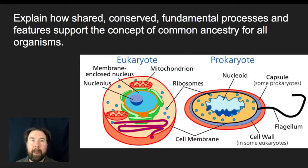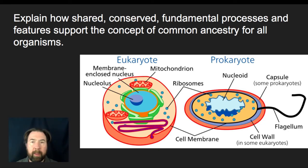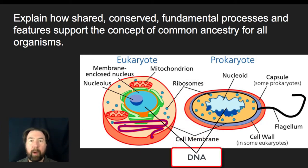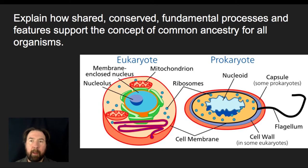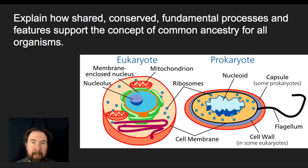It's important to remember that shared, conserved, fundamental processes found amongst all organisms are evidence of common ancestry. We know that there's a variety of different types of cells, but all cells have ribosomes, all cells have a cell membrane, and all cells have DNA. We're going to look at these highly conserved structures and some highly conserved processes, like metabolic pathways found in large groups of organisms. By comparing those, we get evidence of the common ancestry of a group of organisms.